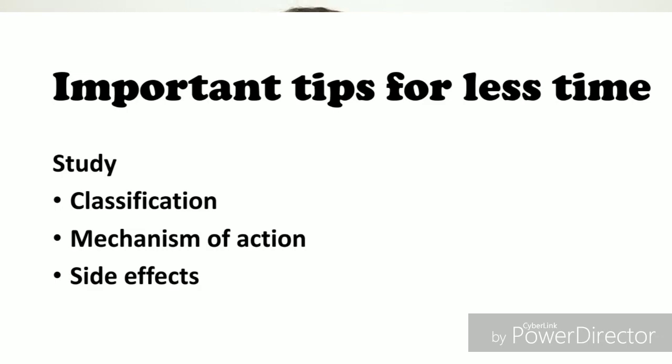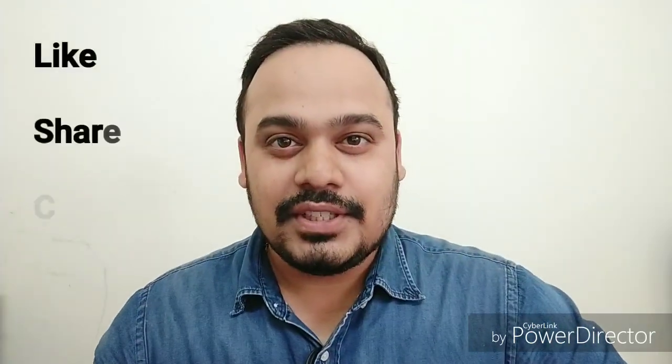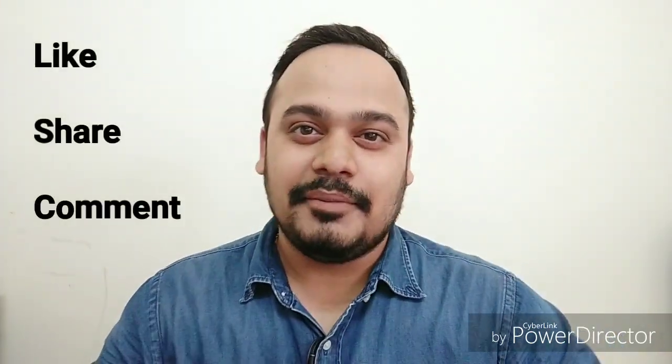It's always better to have only one book throughout your preparation. You have to remember all the mechanisms of action, classifications, and side effects. If you have very little time, just go through all the classifications. If you have at least one to two months, go through side effects, classification, and mechanism of action — these three topics are very important. You don't have to go through the whole book; just remember these three. Thank you for watching; like, share, and comment.